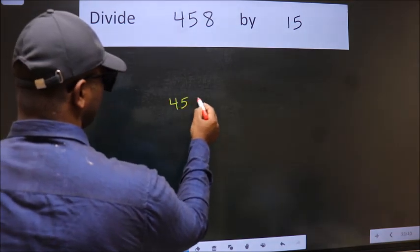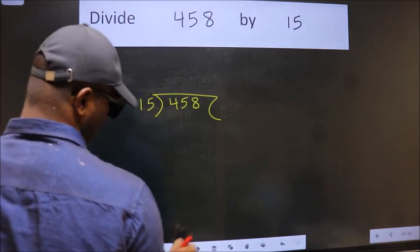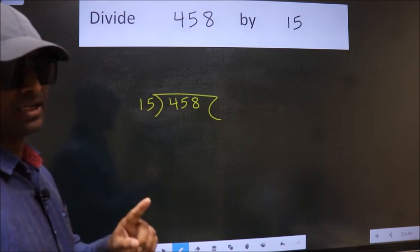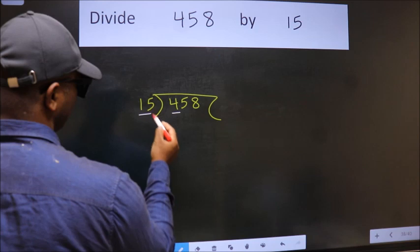458 here, 15 here. This is your step 1. Next, here we have 4. Here 15.